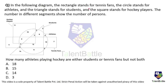In the following diagram, the rectangle stands for tennis fans, the circle stands for athletes, the triangle stands for students, and the square stands for hockey players. The numbers in different segments show the number of persons. The question: how many athletes playing hockey are either students or tennis fans, but not both? First, we want athletes — whoever is inside the circle is our concern; cancel others out.